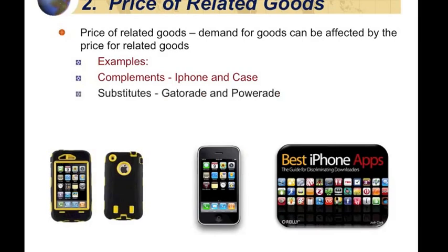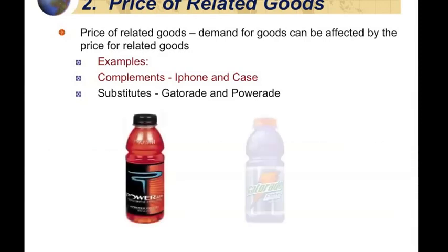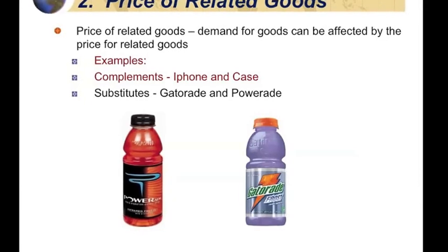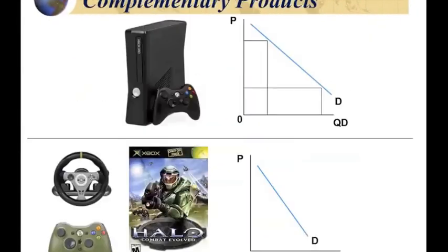The price of related goods can also work in opposing forces. For instance, Powerade and Gatorade are very similar products in the same market but owned by two different companies. If the price of one of these goods goes up or down, this can have an adverse or positive effect for the opposing product, because we can substitute one product for the other.